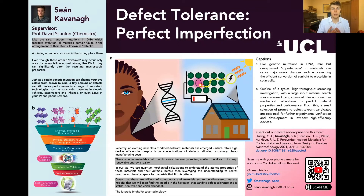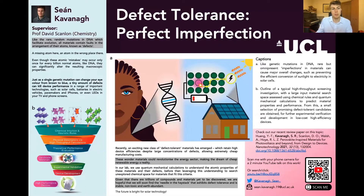Hi, my name is Sean Cavanagh. I'm a PhD student in the groups of David Scanlon at UCL and Aaron Walsh at Imperial, and my research is focused on the use of computational modelling to understand, discover and design new solid-state materials for applications such as solar photovoltaics, batteries and thermoelectrics. Here I'm going to briefly describe my poster titled Defect Tolerance, Perfect Imperfection, which gives a snapshot of one of our research focuses.